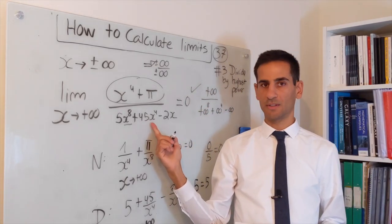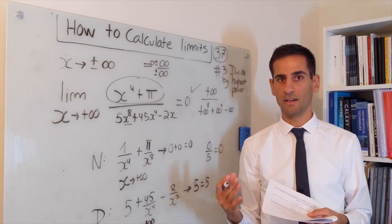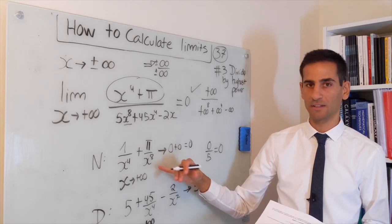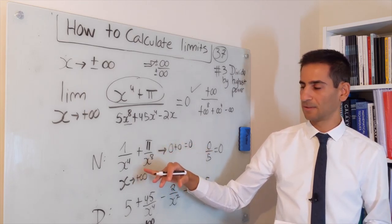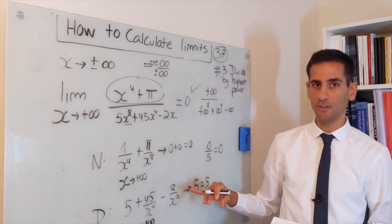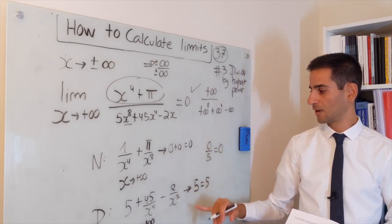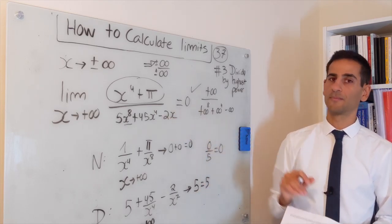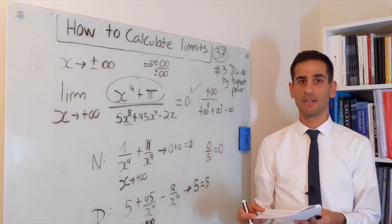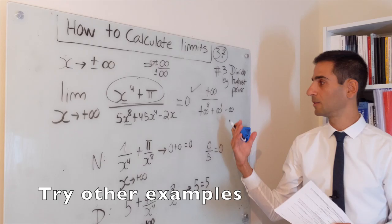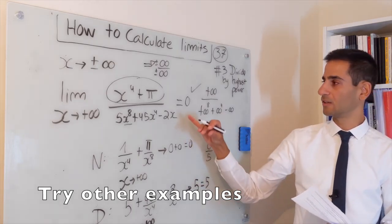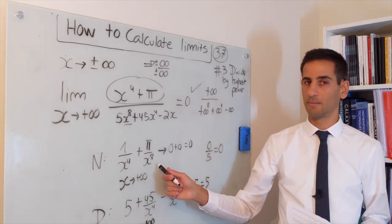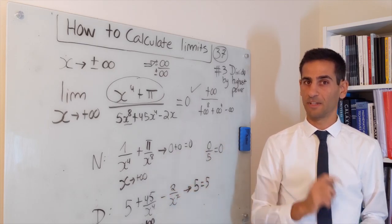Because of the properties of limits, the limit of the entire expression is the quotient of the individual limits, which means the limit is 0 over 5, which is 0. Your mathematical intuition might have been correct all along, but the rigorous way of showing it is to split up the limit — dividing by the highest power, showing that the top goes to 0 while the bottom goes to 5. Don't just say this is 0 because you can see it or plugged it into a calculator; the best way is dividing by the highest power.